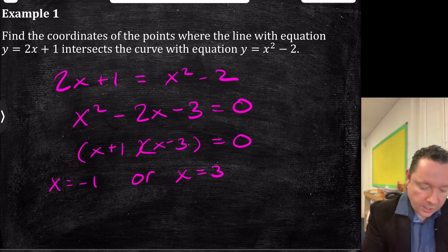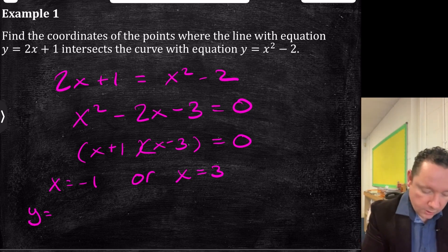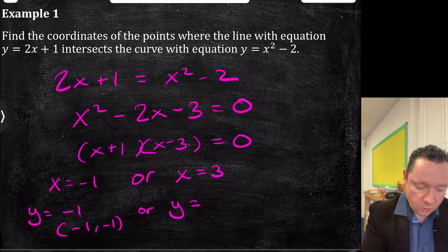We'll want the coordinates also, so sub into y. When x = -1, y is -2 + 1, which is -1. The first point is (-1, -1). When x = 3, 2(3) = 6, plus 1 is 7. The other point of intersection is (3, 7).